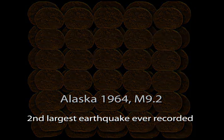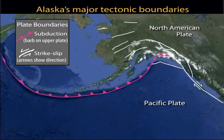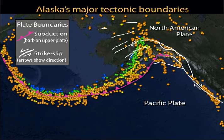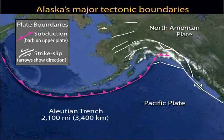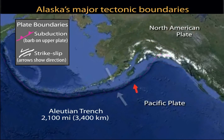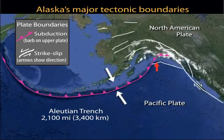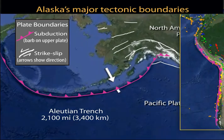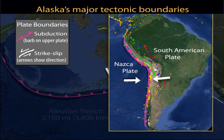To address the great earthquake rupture process, let's first examine the plate tectonics of the North Pacific region. The distribution of earthquake epicenters shown earlier roughly defines plate boundaries. The Aleutian Trench marks a 2,100-mile-long subduction boundary between the Pacific and North American plates, similar to the Nazca Plate diving beneath the South American Plate at the Peru-Chile Trench.